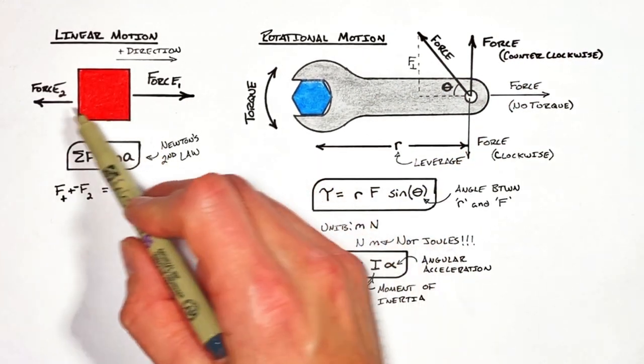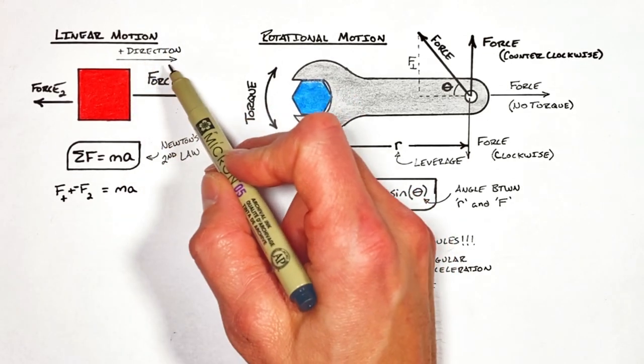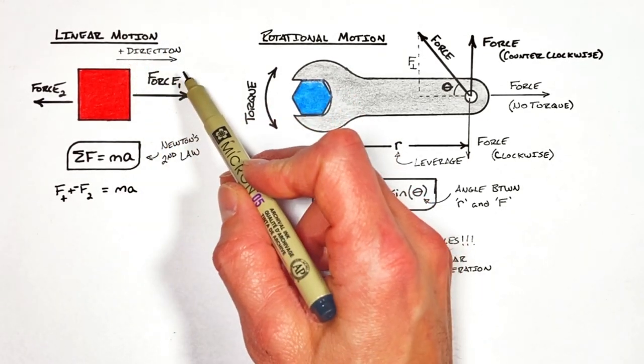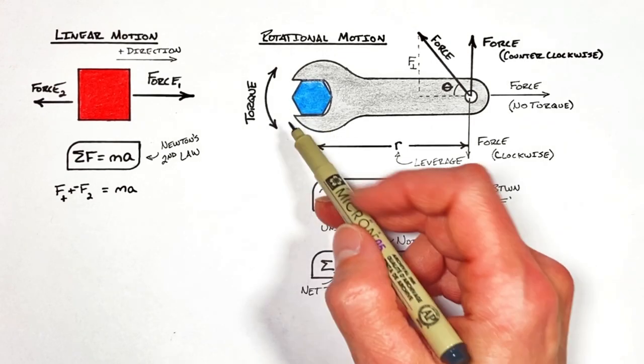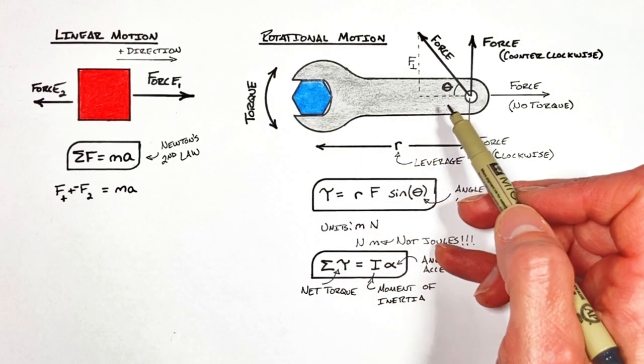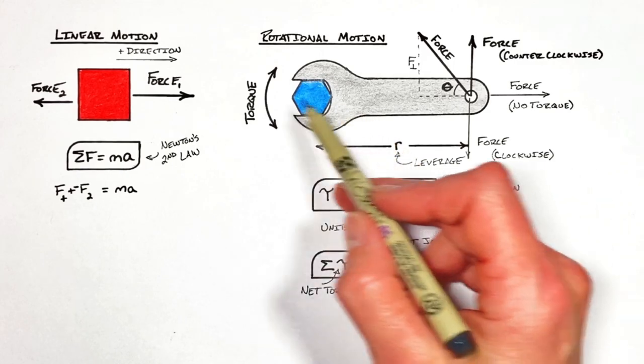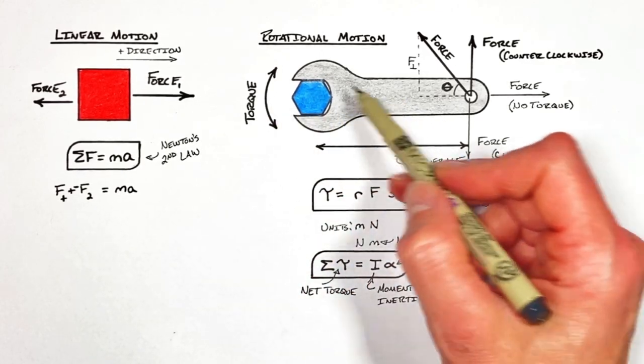Now when applying Newton's second law in a straight line, we had to establish a positive direction, typically to the right. And just in the same way when applying Newton's second law in a circle, we again have to establish a positive direction. The issue is right and left or up and down really don't apply here.